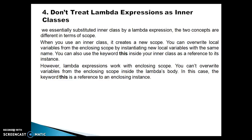Just because you can substitute an anonymous inner class with a lambda expression does not mean both are the same. In terms of scope, both are different. When you use an inner class, it creates a new scope. You can override local variables from the enclosing scope by instantiating new local variables with the same name. You can also use the keyword 'this' inside your inner class as a reference to its instance. So if you use 'this' inside the anonymous inner class, it refers to the instance of the anonymous class itself.